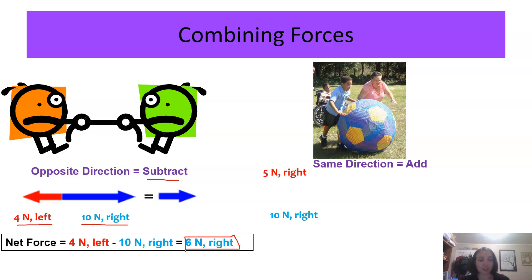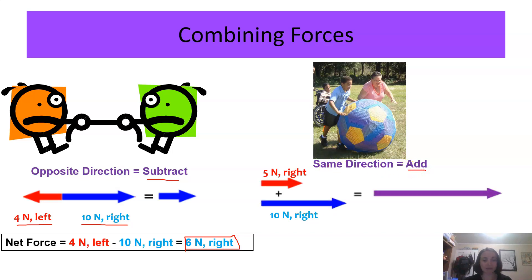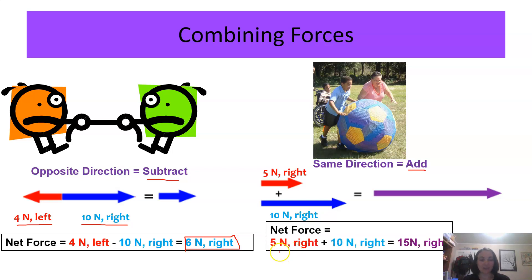Example number 2: when both players are working together, pushing in the same direction, you add the forces together. One player is pushing 5 newtons to the right and the other is pushing 10 newtons to the right. That gives you a net force of 15 newtons to the right.